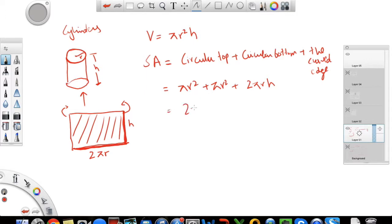Pi r square pi r square, same quantity. I can shorten to 2 pi r square plus 2 pi r h. So again, it will be good to memorize these two formulas, your volume and your surface area.